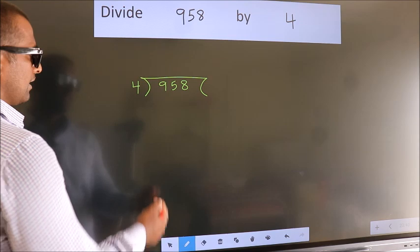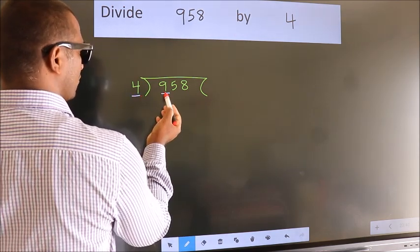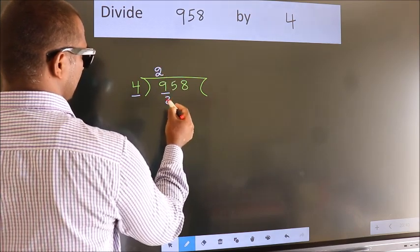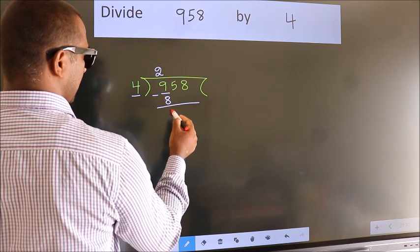Next. Here we have 9, here 4. A number close to 9 in 4 table is 4 twos, 8. Now we should subtract. We get 1.